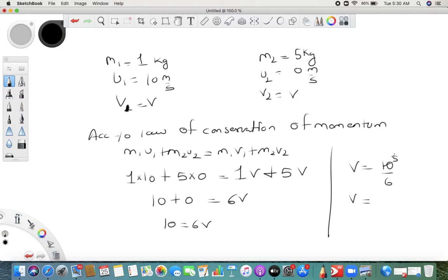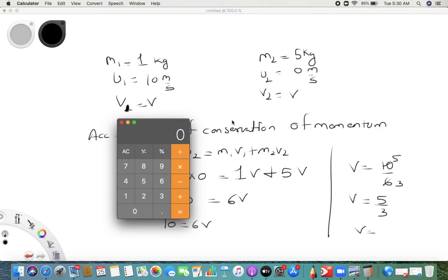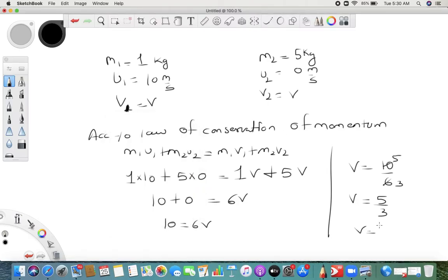10 is equal to 6v, simply v is equal to 10 upon 6, so v is equal to 5 by 3, which when we calculate it is 1.6 meter per second. So that is how you get the first answer.